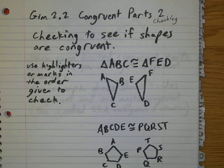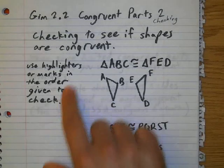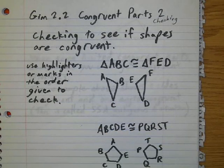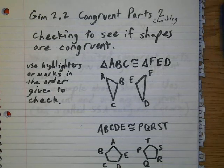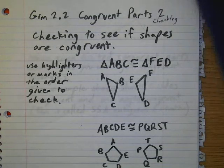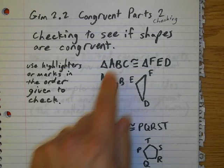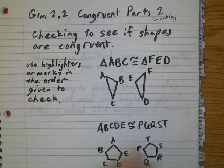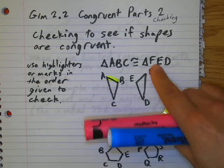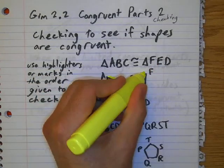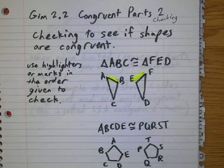So we're going to use a highlighter to help us see if the sides are marked correctly to make this true. So AB is the first two letters, I'm going to highlight that in yellow. Over here, the first two letters are FE. Do those look the same length? Yes. Let's continue.